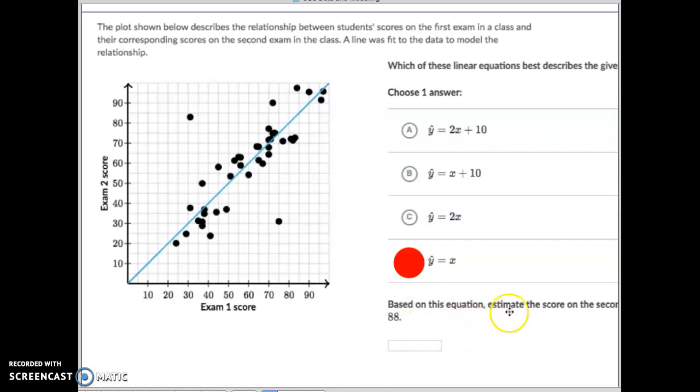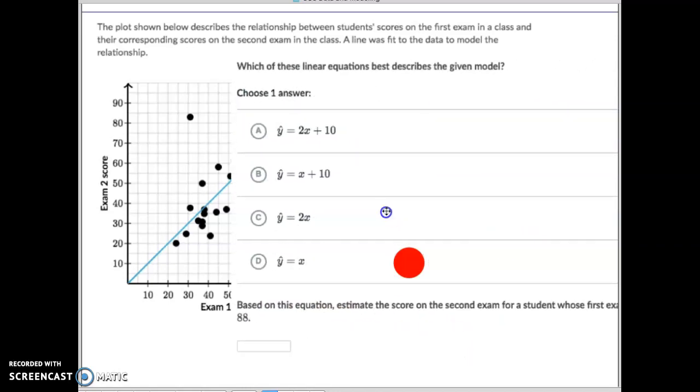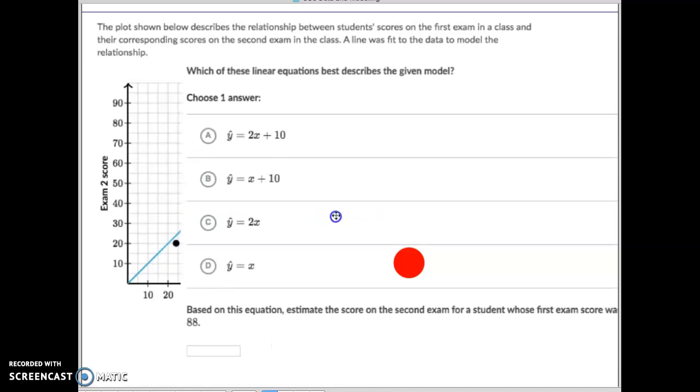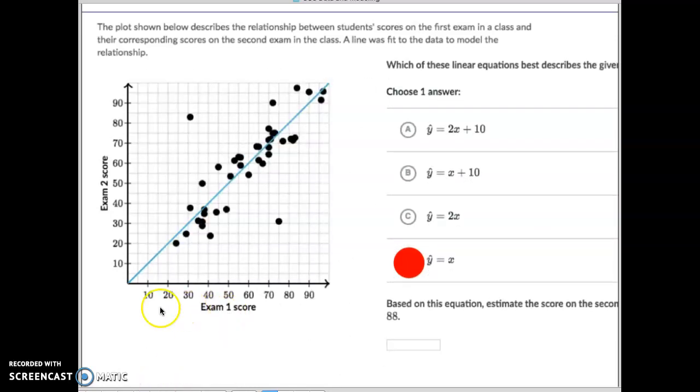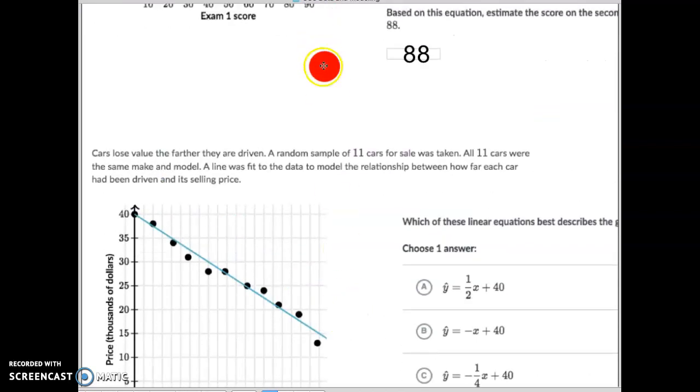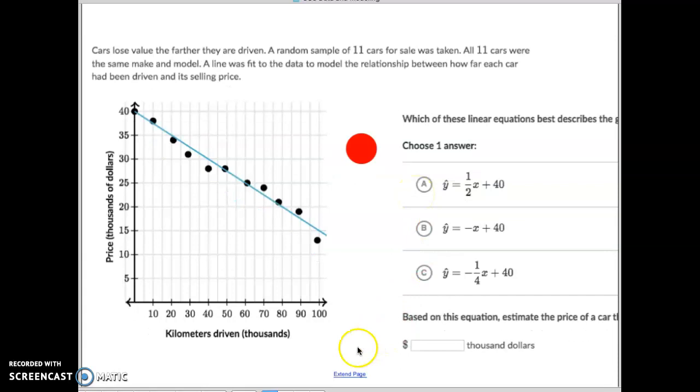All right. Then, it says, based on this equation, estimate the score on a second exam for a student who scored 88 on the first exam. Well, these are your first exam scores. These are your second exam scores. Student who scored 10 on the first one scored 10 on the second. Student who scored 50 on the first one scored 50 on the second. What do you think a student who scored 88 will get on their second one? That's right. It's 88. So, that wasn't too terribly difficult. So we plug that in here. All right. Let's do our last one. I'm going to steal this red dot so I can have it for this next one.